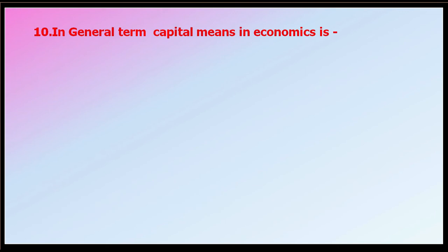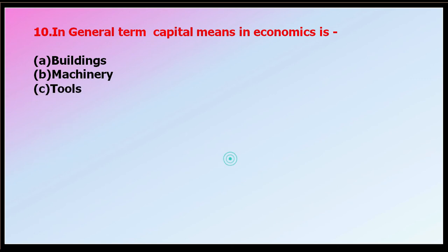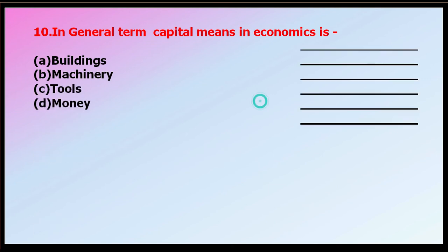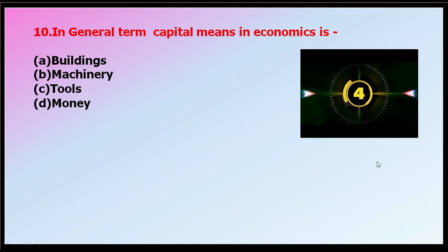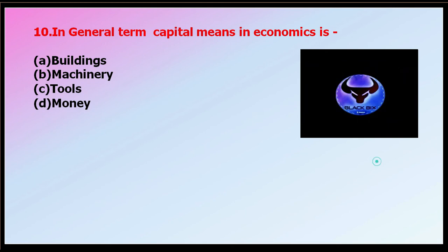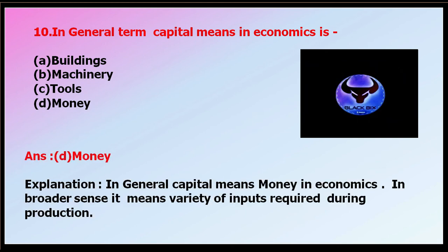Question number ten: in general terms, what does capital mean in economics? Options: buildings, machinery, tools, or money. The correct answer is money. In general, capital means money. In a broader economic sense, it refers to the variety of inputs required during the production process.